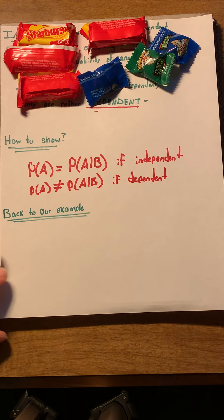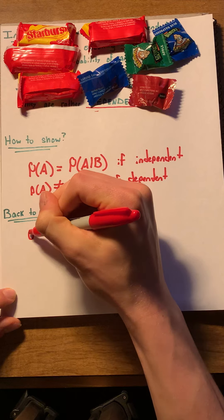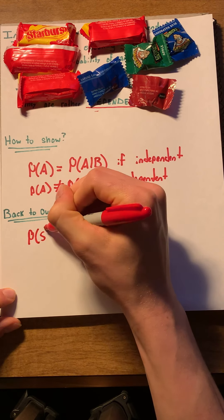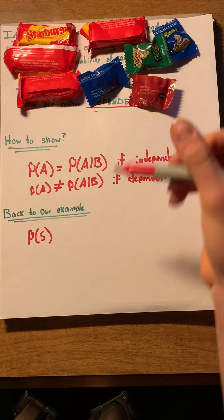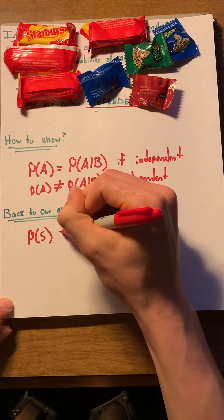Again, let's go back to our example. What is the probability of picking a starburst? The probability of picking a starburst is easy. It's four-eighths. And we calculated that the probability of picking a starburst, given that I picked a warhead, is equal to four-sevenths. It's pretty easy for us to see that four-eighths does not equal four-sevenths. And so, we can say that this must be dependent.